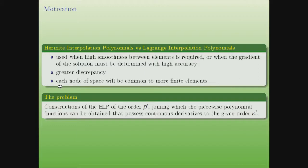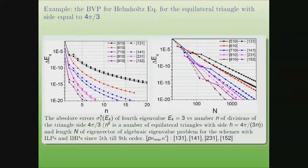In the case of Hermite interpolation polynomials, each node of the finite element grid will be common to more finite elements. To illustrate this, we present the result of the solution of the boundary value problem of the wave equation for the equilateral triangle, which has integer eigenvalues.